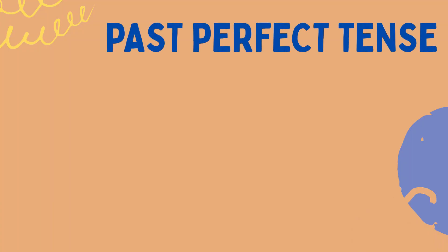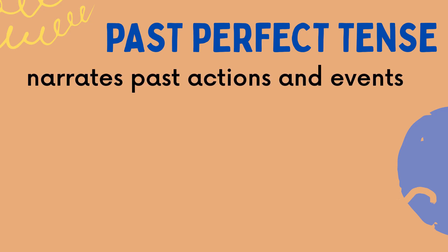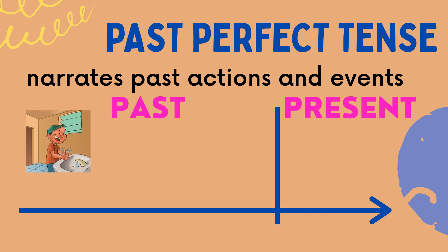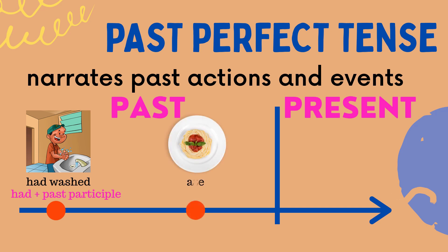Past Perfect Tense narrates past actions and events. A sentence that uses Past Perfect Tense provides two actions in the past, wherein the first past action or condition is completed ahead of another past action. It is usually formed using two structures: for ordinary form, we follow the format HAD plus the Past Participle of the verb. For continuous form, we follow the format HAD BEEN plus the VERB-ING form.